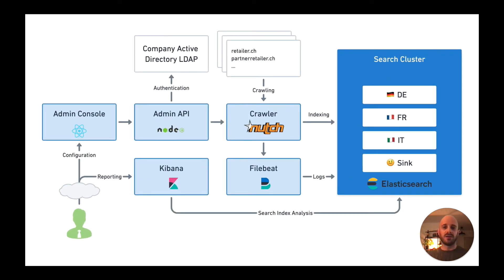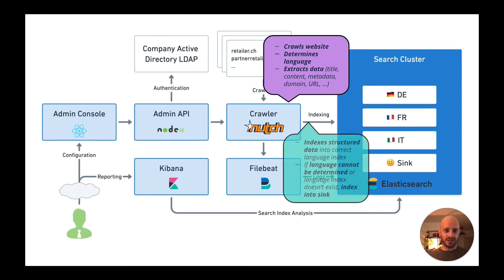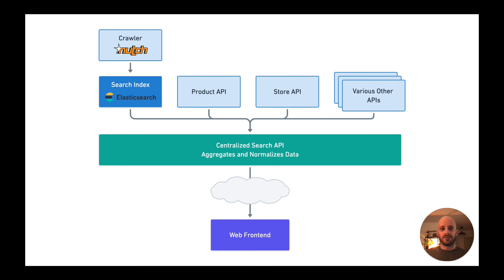The new solution we developed back in 2017 looked like this. Apache Nutch crawls different websites, and for each site it determines its language, extracts data such as title, content, metadata, domain, and so on, then indexes that into the Elasticsearch cluster. We have four different indices: one for German, one for French, one for Italian, and a sync index. The sync index is used when Nutch is unable to determine a site's language, or if it's not one of the three main languages — for example, English sites go into the sync index.